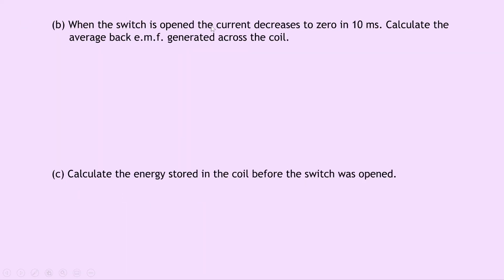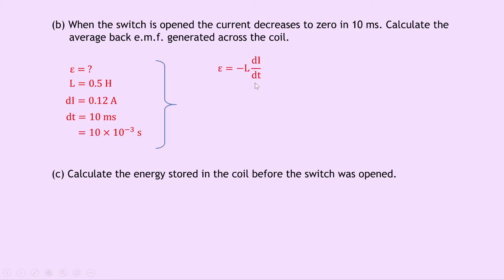Part B says when the switch is opened, the current decreases to 0 in 10 milliseconds. Calculate the average back EMF generated across the coil. We're trying to find epsilon. L is 0.5 Henrys, dI is 0.12 Amps (the maximum current from part A), and dT is 10 milliseconds, which is 10 times 10 to the minus 3 seconds. Using epsilon equals minus L times dI/dt, we get minus 0.5 times 0.12 divided by 10 times 10 to the minus 3, giving an answer of minus 6 volts. The negative sign means the back EMF is opposing the direction of current in our circuit.